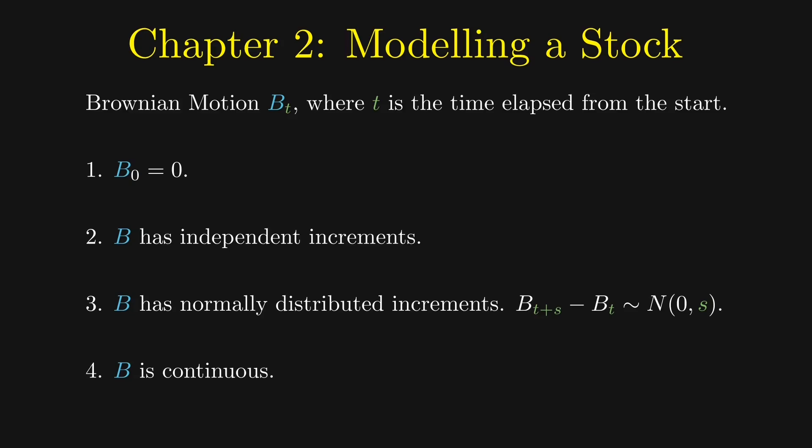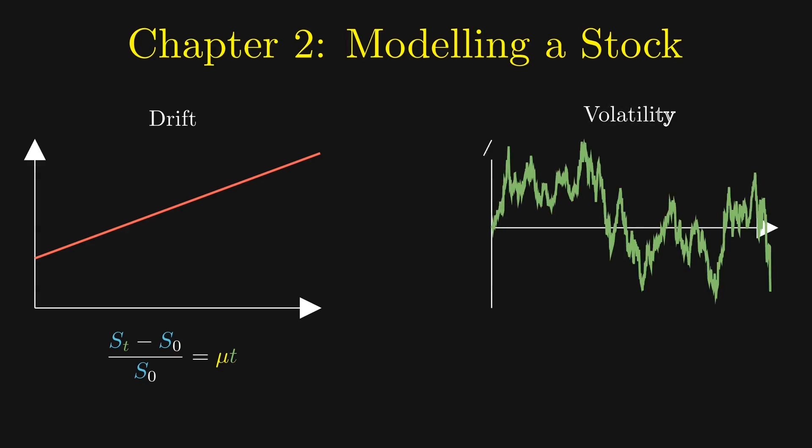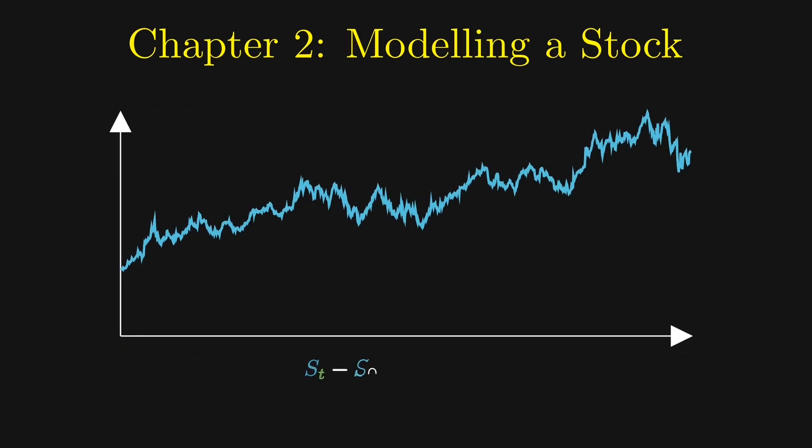Now it's time to bring back the drift we ignored. On the left side, the red line represents the drift. The percentage change of the stock price from time zero to time t is simply the slope mu multiplied by time t. On the right side, the green line represents the volatility. The percentage change is sigma times B_t. When we combine both components, we get the original graph. The percentage change is mu times t plus sigma times B_t.